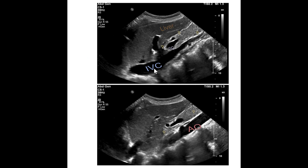We can also look for those landmarks in the longitudinal plane. If we have the IVC in long, we know we should be able to see the pancreas head just anterior to it. If we can see the portal confluence, we know we should be able to see the pancreas neck. Here's the pancreas in the longitudinal plane anterior to the IVC. Same idea with the aorta — we should be getting into pancreas body over here. We can see the portal confluence and splenic artery, all sandwiched between the liver and the aorta.